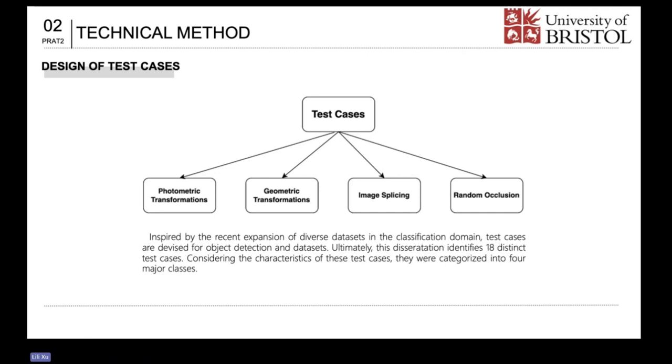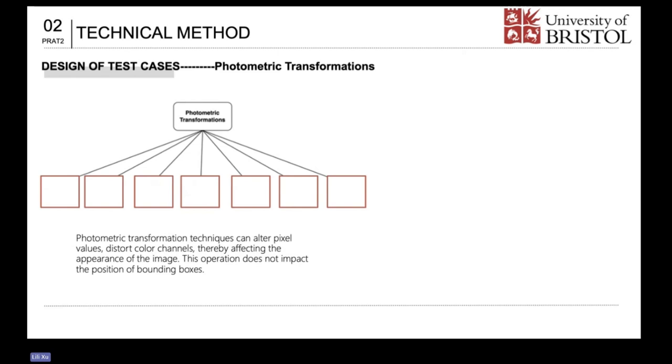Given the characteristics of photometric transformations, they can alter pixel values, distort color channels, thus affecting the appearance of the image. This operation does not impact the position of bounding boxes. Photometric transformations include hue test case. The image on the right demonstrates the effects of applying the hue test case to the image.